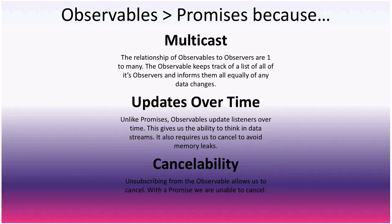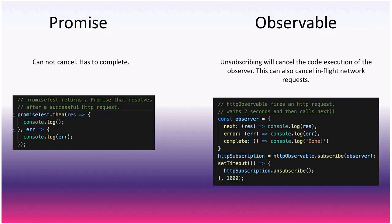Cancellability is the third advantage: unsubscribing from an observable allows us to cancel, whereas with promises you cannot. Whatever is inside a promise callback will definitely get called — even setting the promise variable to null won't stop it. With observables you can unsubscribe and cancel even in-flight network requests, so you don't have to worry about unexpected code execution.